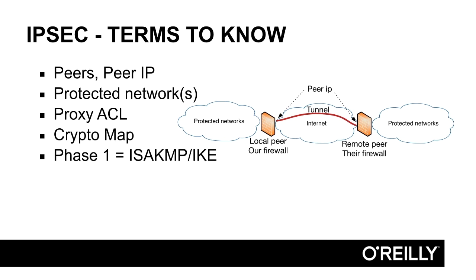ISAKMP and IKE are used interchangeably in this course because they are more or less the same thing. So when I talk about phase one, I'm talking about the IKE phase, the ISAKMP phase. After phase one is successfully set up, there is a phase two setup. Phase two is also called the IPSec phase, which is where we set up how to encrypt the actual traffic sent in the tunnel. In phase one, there is an initial setup of encryption and protection methods used to protect the phase two setup. In phase two, there is a handshake and negotiation to set up parameters used to encrypt the actual tunnel.